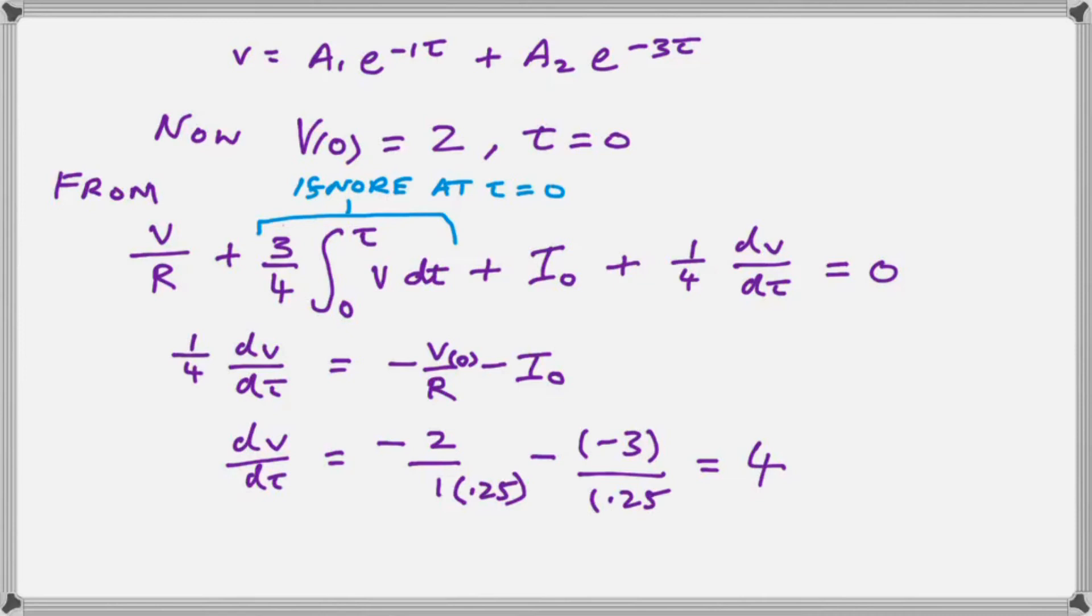So that term will be zero and we only need to consider v over r, i_o and a quarter dv. So we move the v over r and the i_o over to the other side and we divide by the quarter and we end up with the subject as we want it so that we have dv over dt equal to four.